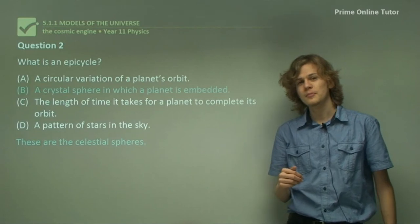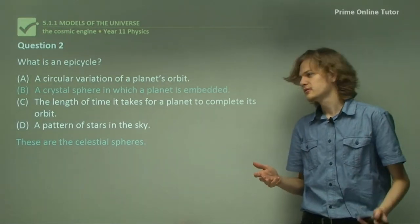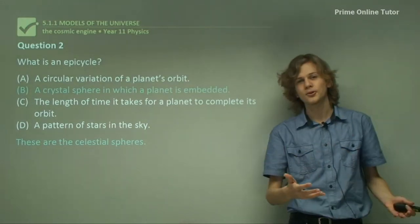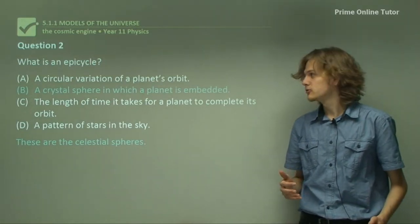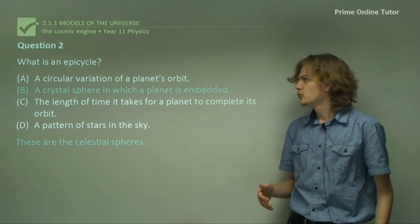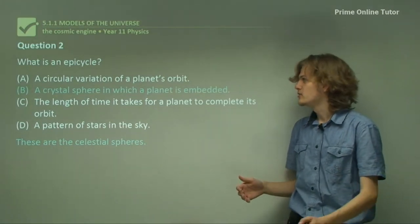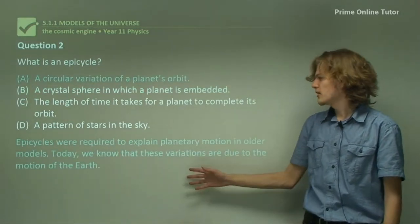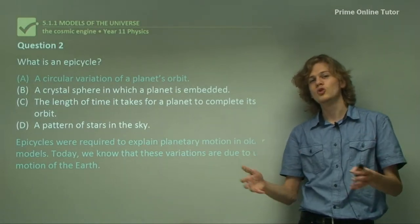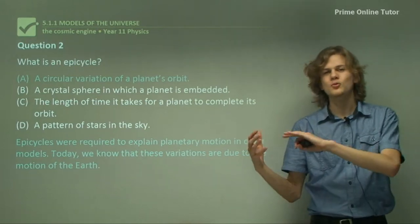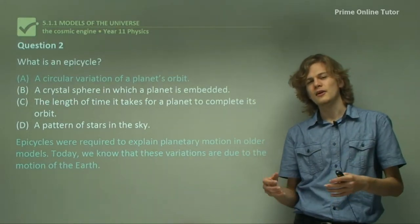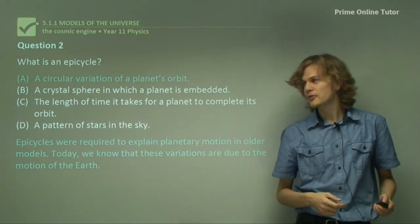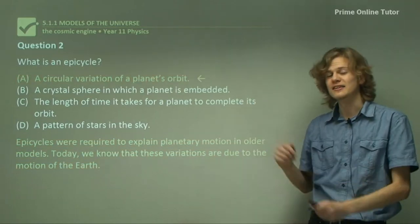Is it a crystal sphere in which a planet is embedded? Aristotle called these celestial spheres. And so these are not epicycles. Epicycles are actually a modification to Aristotle's model that was made a century later. We find that an epicycle is in fact a circular variation of a planet's orbit. Epicycles were required to explain the motion of the planets as not being perfectly spherical. Today we know that's because the Earth has to move around the Sun as well. When we observe other planets, they don't seem to be moving in complete circles around us. They seem to do these little epicycle things. So we see that A is the correct answer.